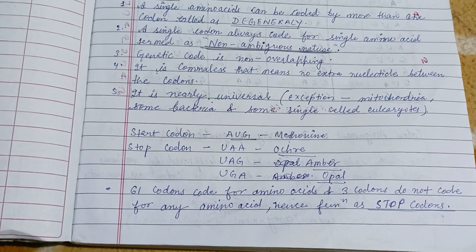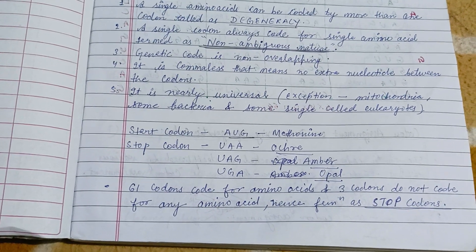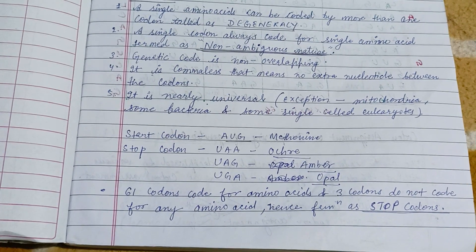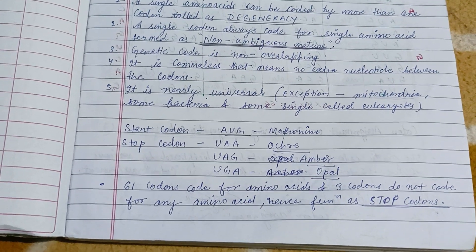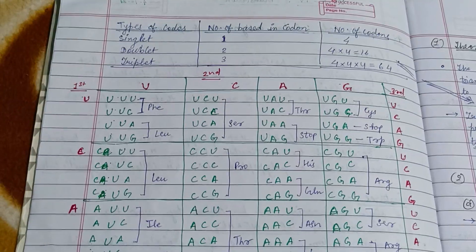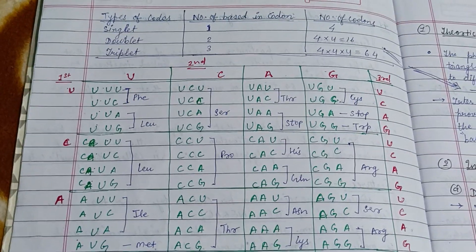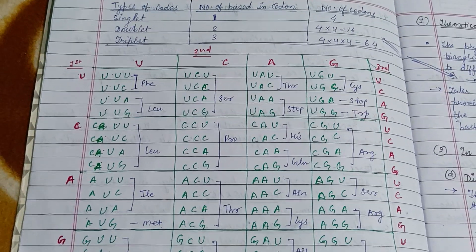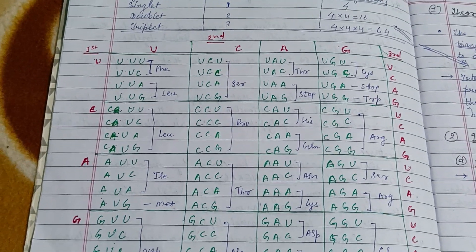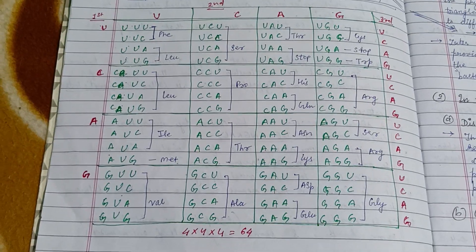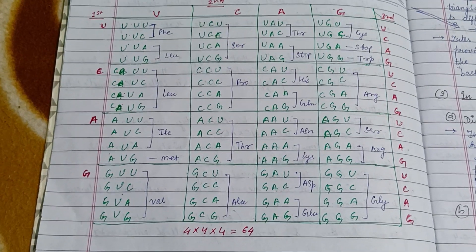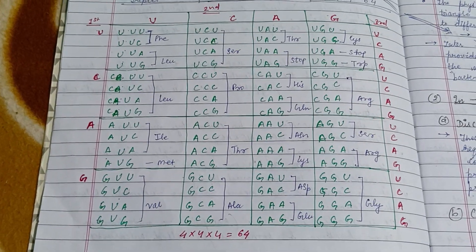The stop codons are UAA, UAG, and UGA, which are also known as Ochre, Amber, and Opal respectively. The total number of codons are 64 triplet codons, which may be memorized through this chart.